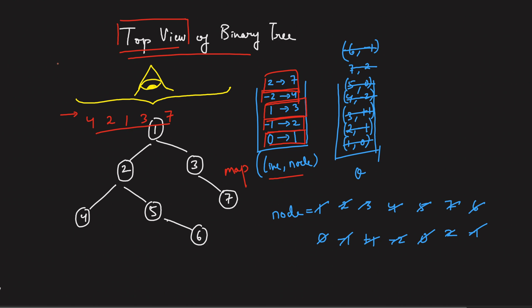Can we use recursive traversal to solve this? The answer is no. For example, with in-order traversal on this tree, on line 1 you'd visit node 6 first, whereas node 3 should be the first node seen on that line from the top. The recursive approach would require additional height logic — tracking which node has the least height on each line — making it unnecessarily complex. Level order traversal is much more intuitive and requires no extra logic.